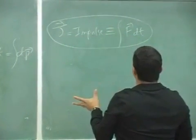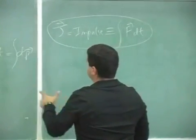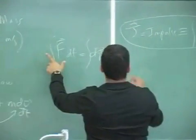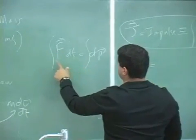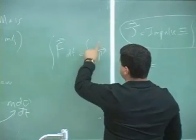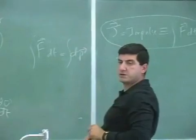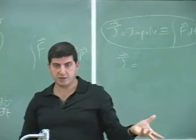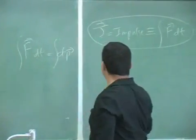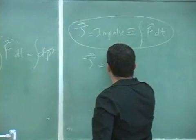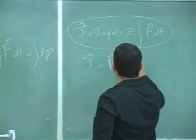Now, why is this defined this way? Well, because the impulse is going to equal, when you integrate F dt, it's equal to the integral of dp, and the integral of dp is delta p, the change in momentum. So p final minus p initial.